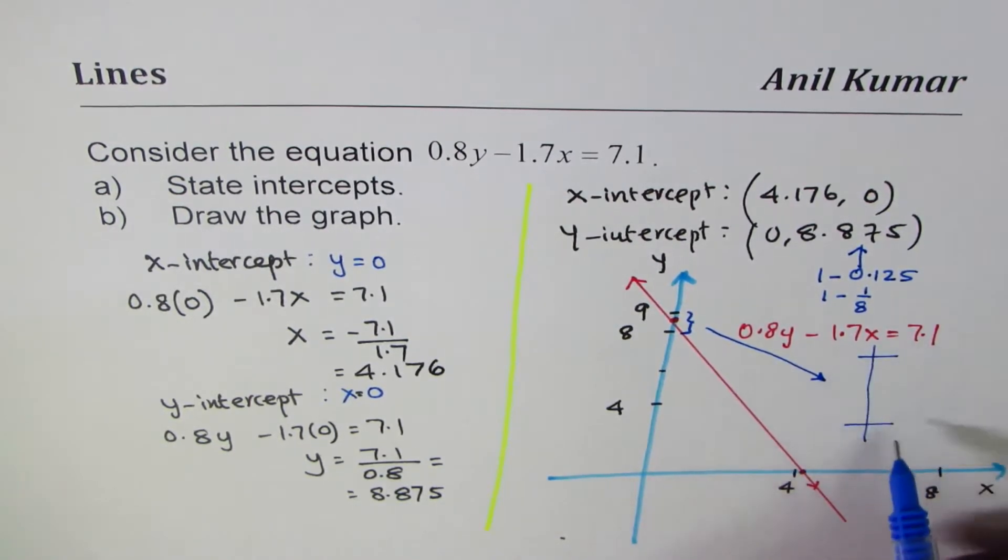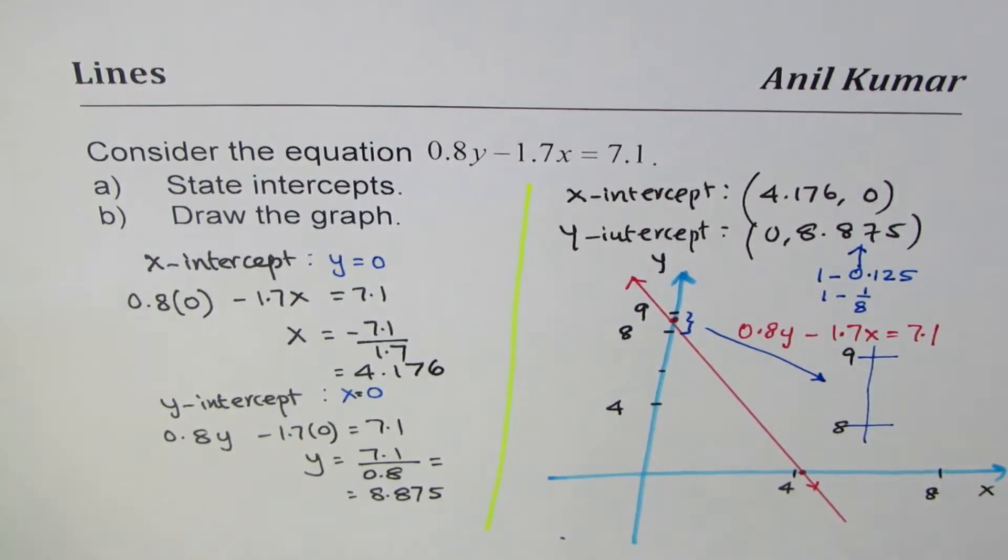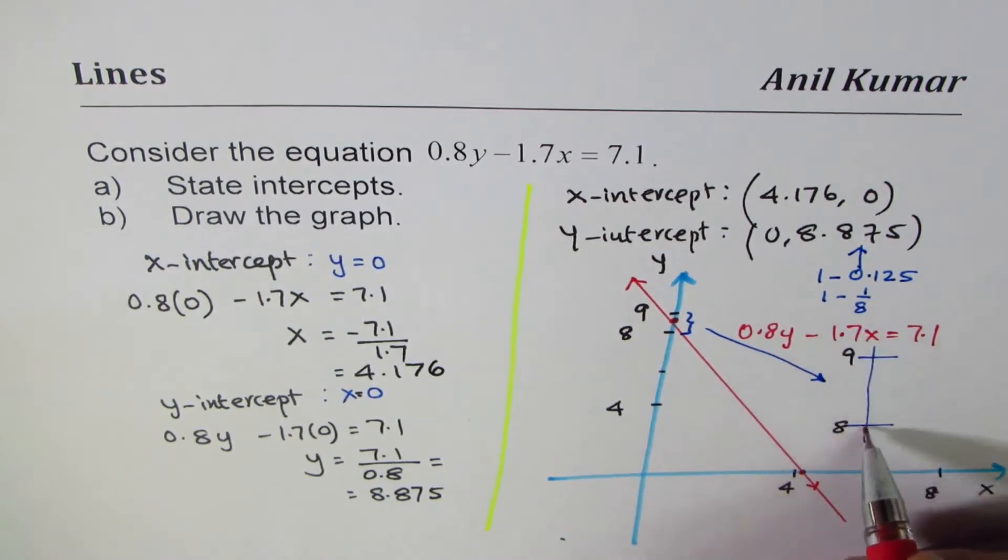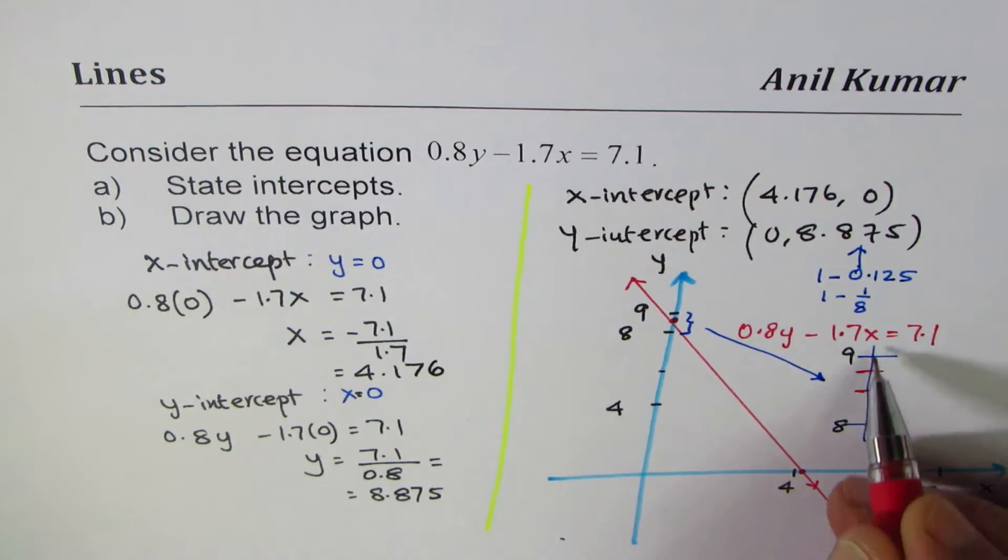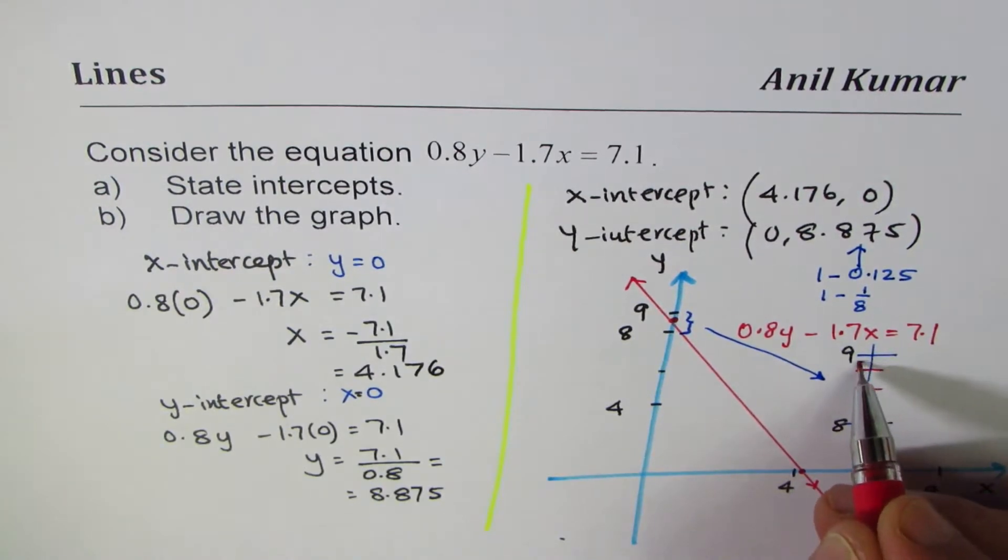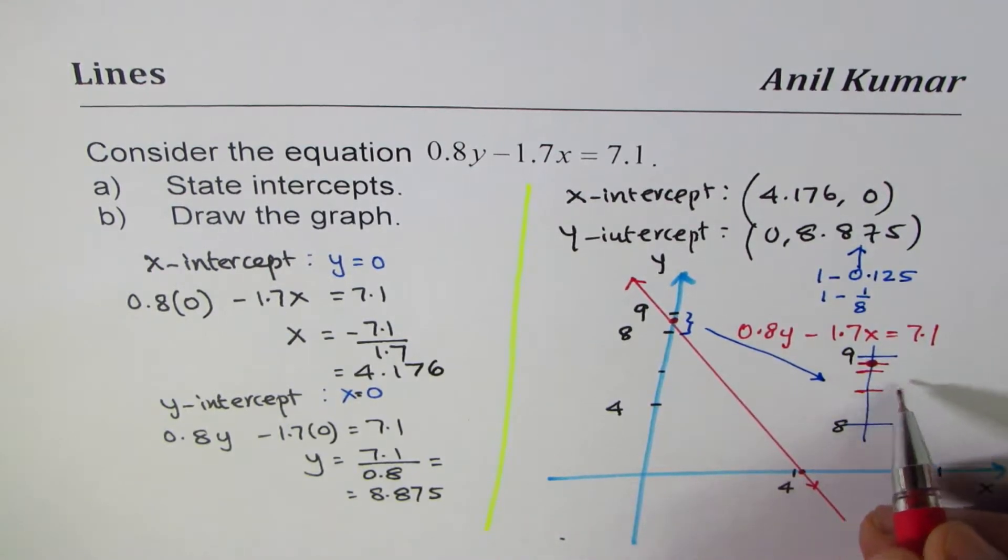This, let's say, is from 8 to 9. We'll divide this into eight equal parts. So let's say this is half, now this is one-fourth, and this is one-eighth. So that is the point which we're talking about, and this point is 8.875.